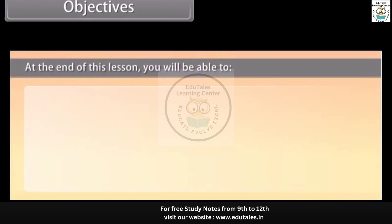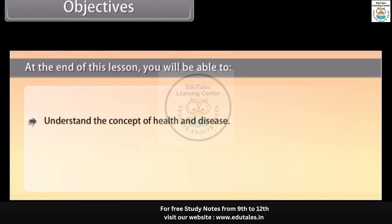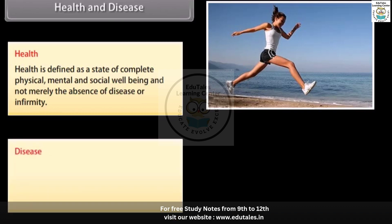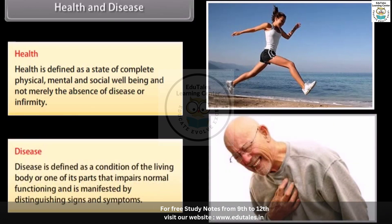At the end of this lesson, you will be able to understand the concept of health and disease and identify common diseases in human beings. Health is defined as a state of complete physical, mental and social well-being and not merely the absence of disease or infirmity. Disease is defined as a condition of the living body or one of its parts that impairs normal functioning and is manifested by distinguishing signs and symptoms.